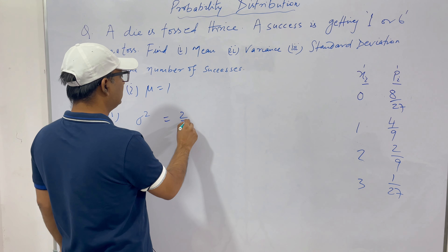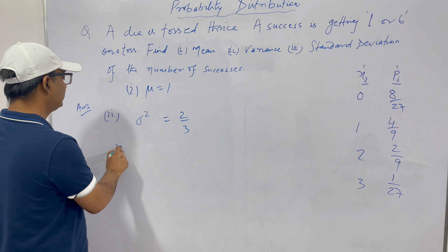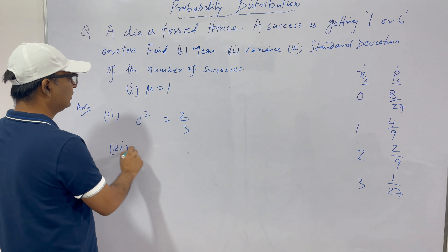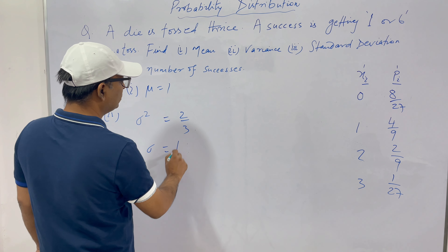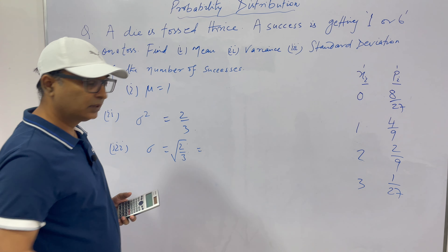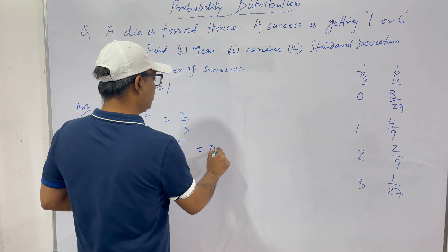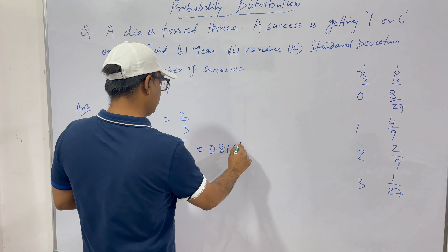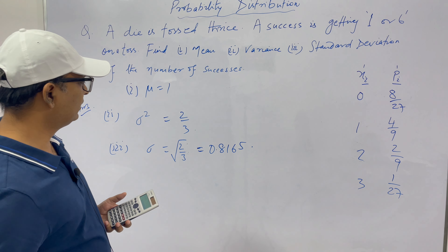The standard deviation is simply the square root of the variance: SD = √(2/3) = 0.8165.